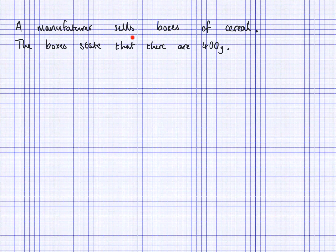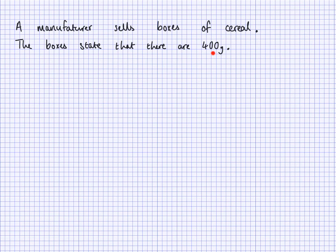A manufacturer sells boxes of cereal. The boxes state that there are 400 grams in each one. A manufacturer can't absolutely get it to be 400 grams — notice that 400 grams is data taken from a continuous scale. So even if it might be very close to 400 grams, it could be 400.000364 or it could be 399.999504. They can't exactly get 400 grams, so they need to go as close as possible.